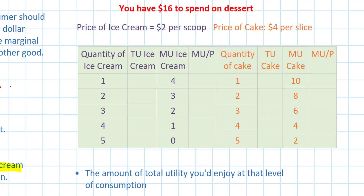It's pretty easy to calculate the total utility however. If one scoop of ice cream provides me with four utils, then the total utility from the first scoop is four. The second scoop provides me with three additional utils, causing my total utility to go up to seven.